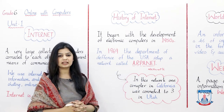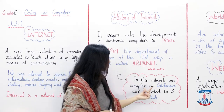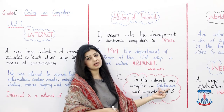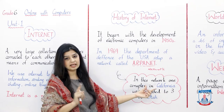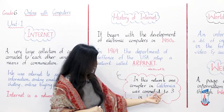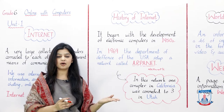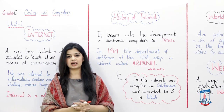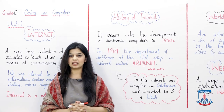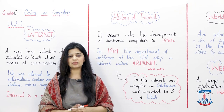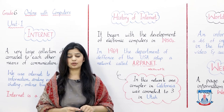In this ARPANET network, one computer in California — which is a state of the USA — was connected to three computers in Utah. This was the first network of the world. After that, work continued on these networks, and today the internet we know became available.